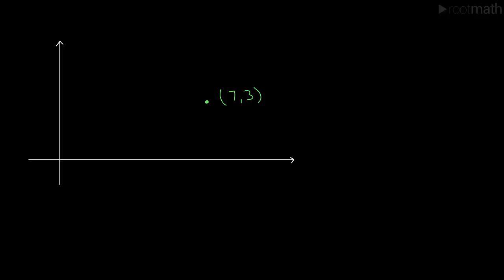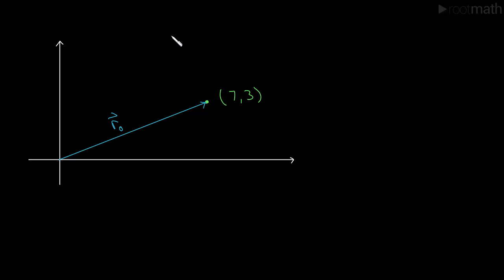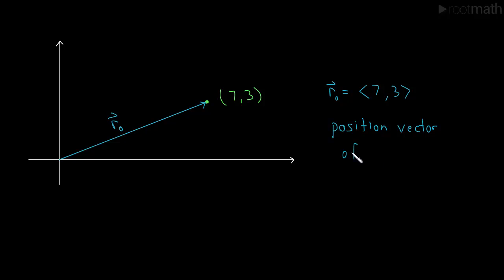What we can do here is we can take a vector, start it at the origin, and have the head of that vector point right at 7, 3. This vector moves over 7 in x and it moves up 3 in y. So that is the vector — I'll call this R0. The vector R0 has the x-component 7 and the y-component 3. This is what we call the position vector of the point 7, 3.